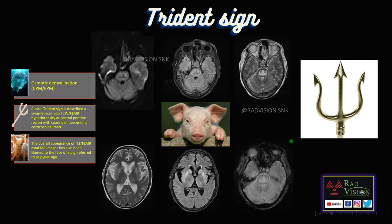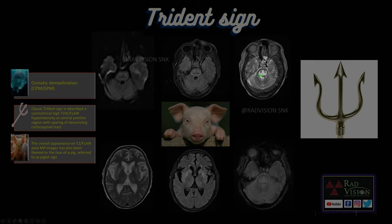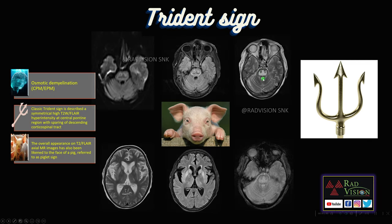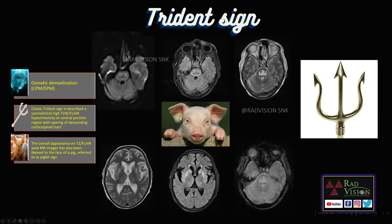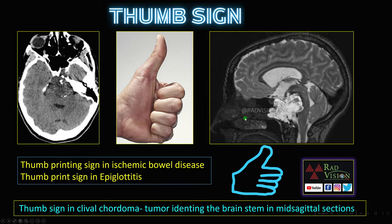Next, the trident sign is seen in osmotic demyelination, where there is a central hyperintense area in the central pontine region with sparing of the descending corticospinal tracts, mimicking a trident. The whole MRI appearance of the pons also mimics the face of a pig — so this is also called the pig sign, face of pig sign, or piglet sign. Remember trident sign and face of pig sign in osmotic demyelination.